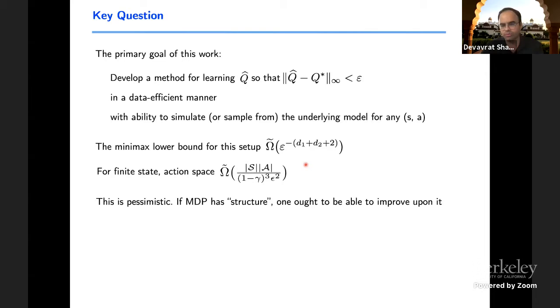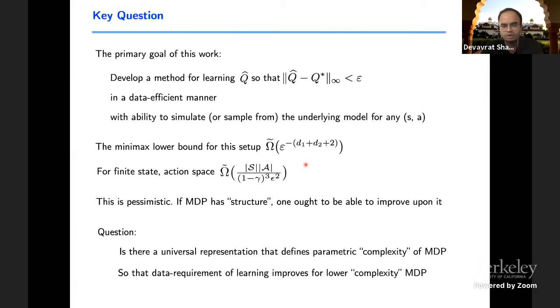This type of lower bound, one way to think about them is to simply reduce to traditional non parametric regression questions or function learning. These are minimax and hence these are adversarial pessimistic. But in practice, one would hope that there are many situations where MDPs do have some structure. And if they do have some structure, hopefully, maybe we could utilize that structure in a meaningful manner and improve upon such bounds.